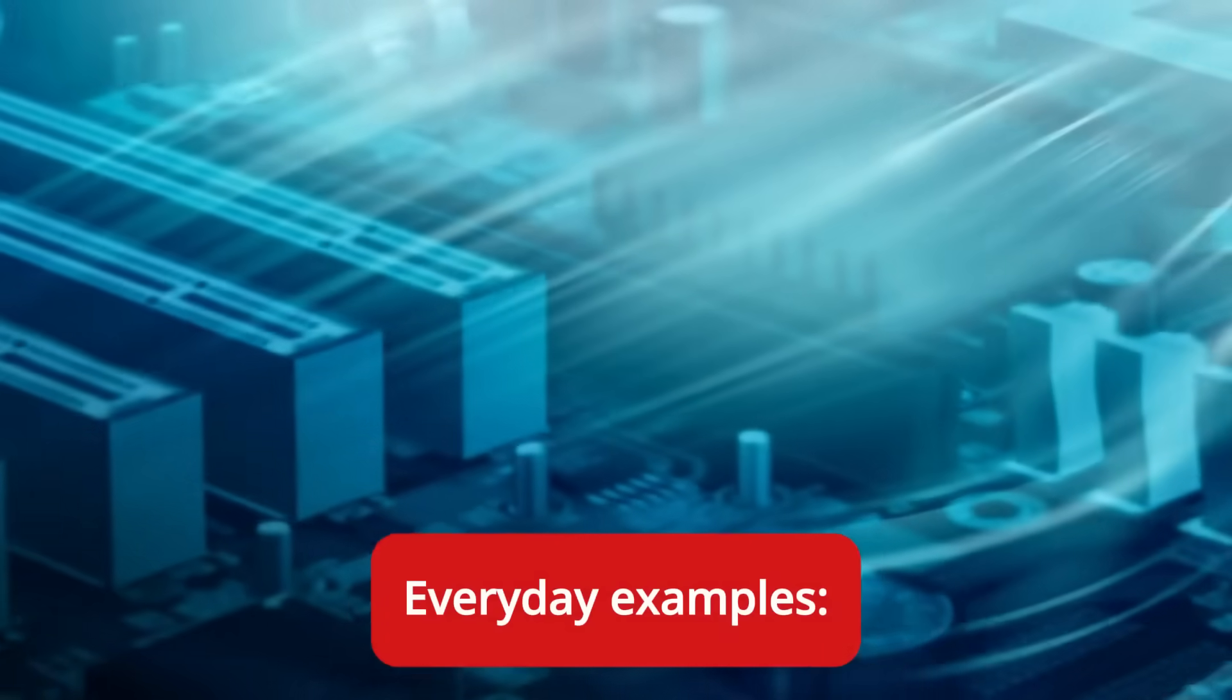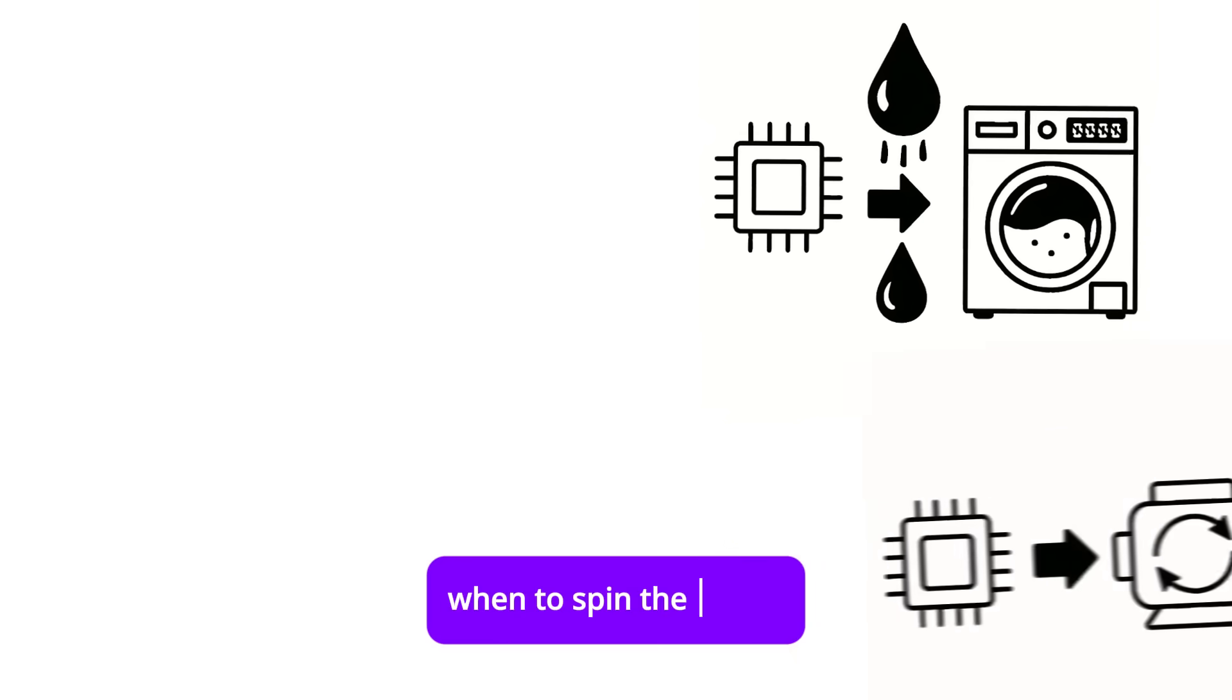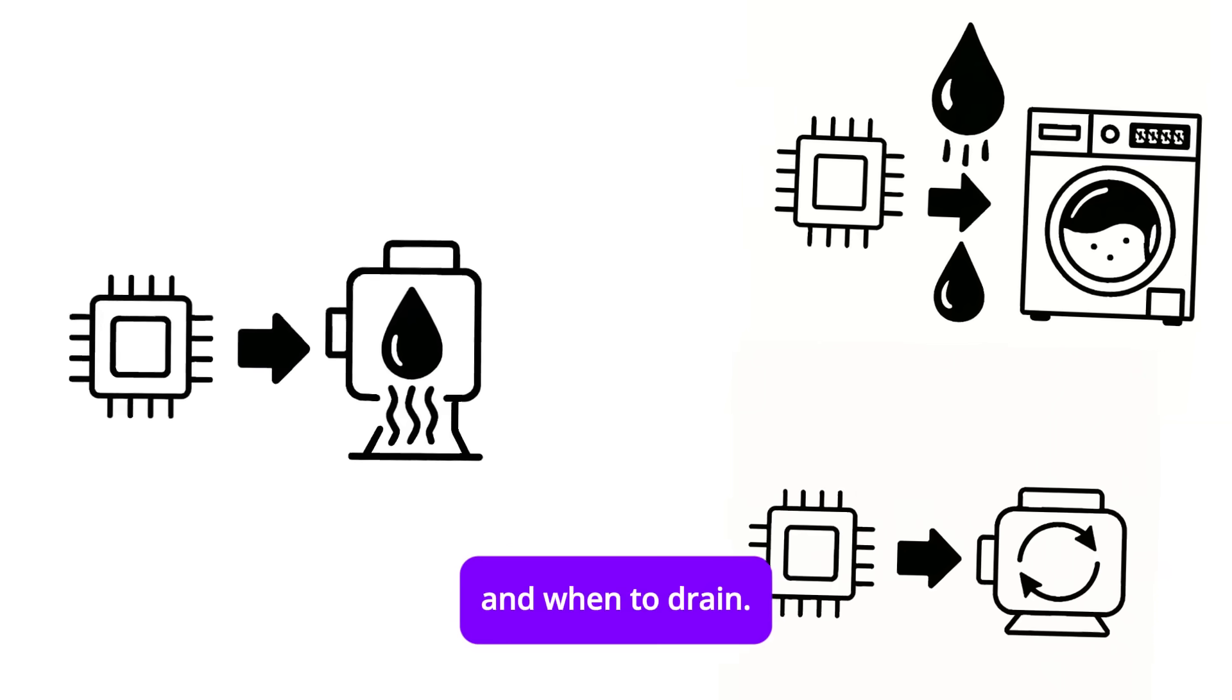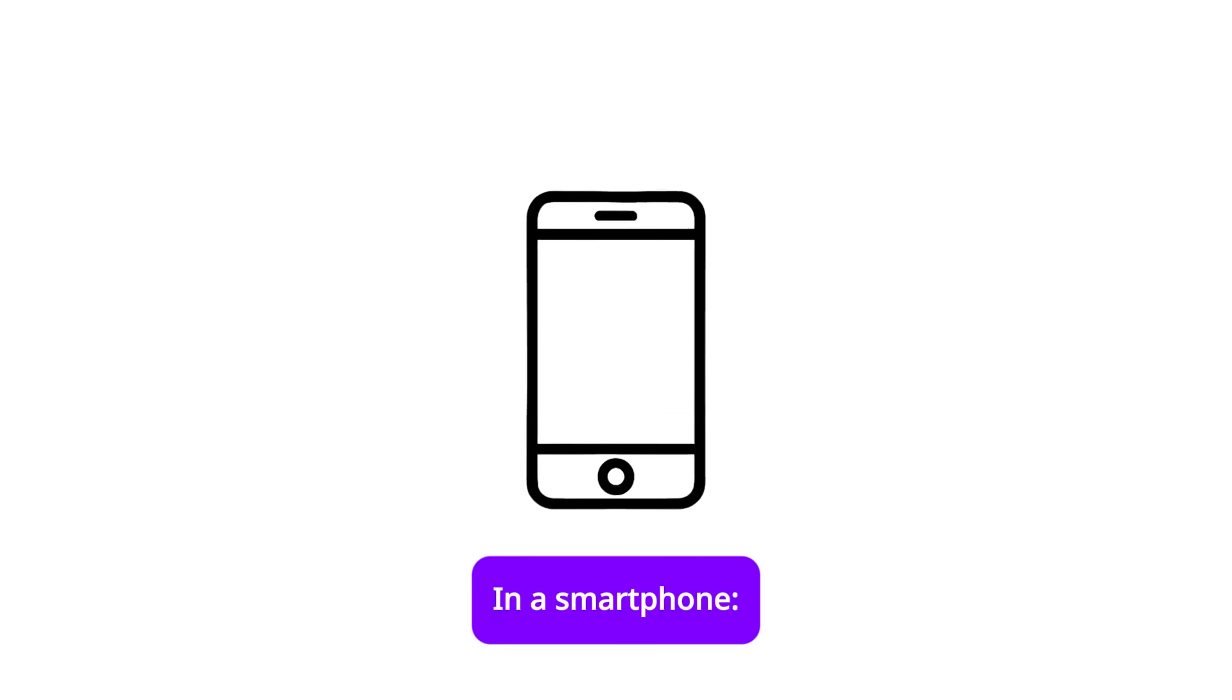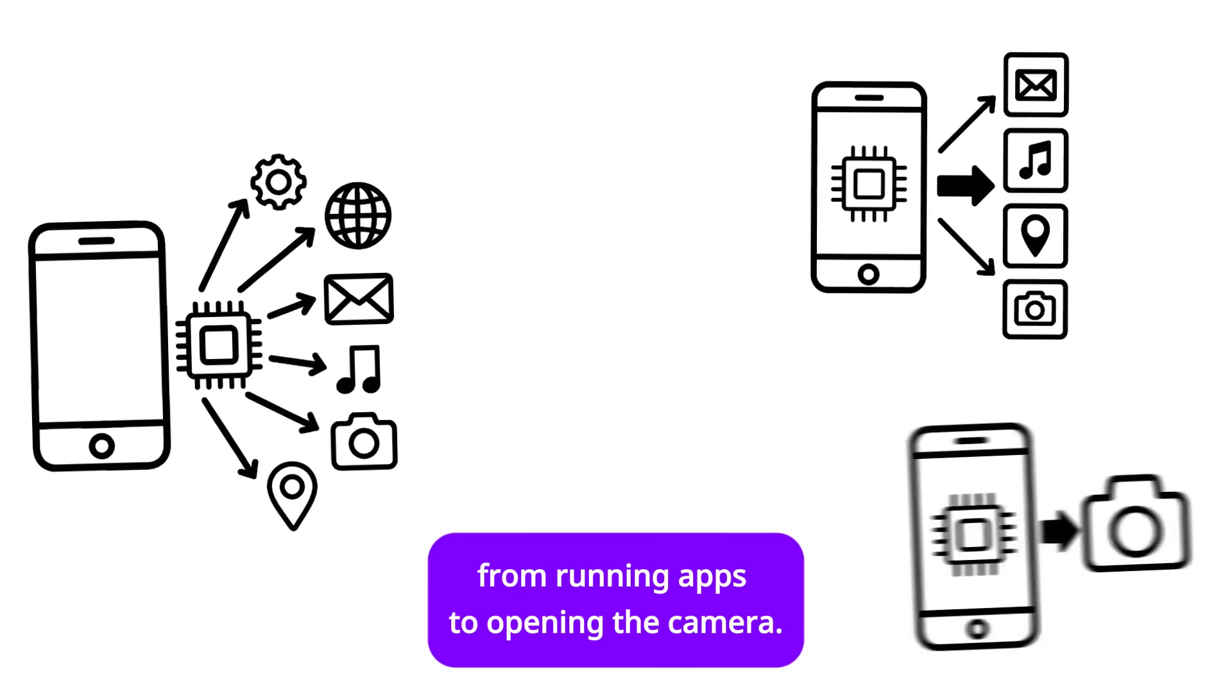Everyday examples: in a washing machine, the processor decides when to let water in, when to spin the motor, and when to drain. In a smartphone, the processor does everything from running apps to opening the camera.